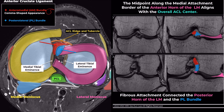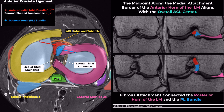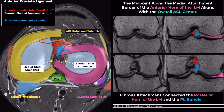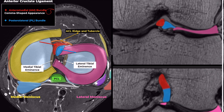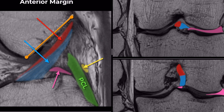Looking at a more posterior coronal image, the posterior root of the lateral meniscus mainly attaches to the intertubercular area, with a thin, long ventral extension reaching just posteromedial to the tibial attachment of the ACL. Thus, the fibrous attachment between the posterior root of the lateral meniscus and the posterolateral bundle of the ACL is clearly visible due to their close proximity.